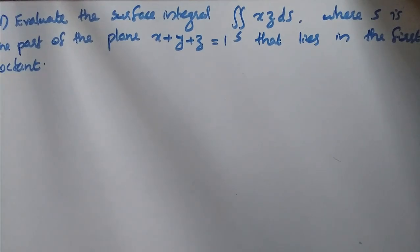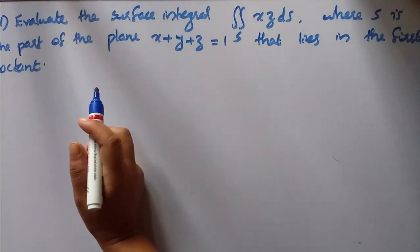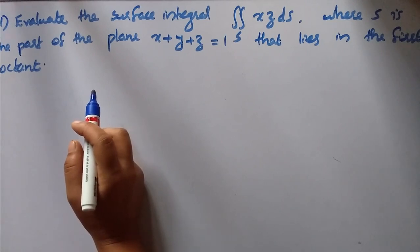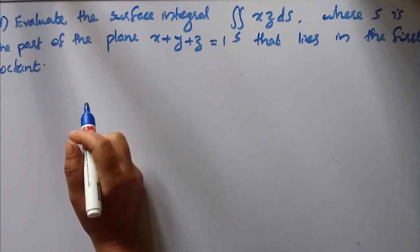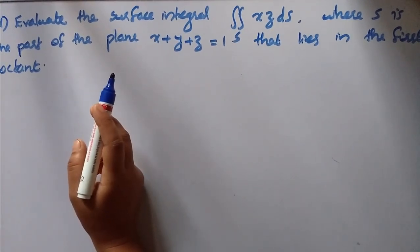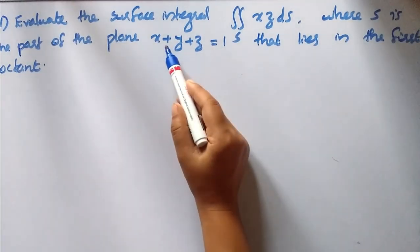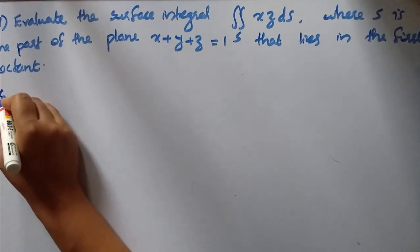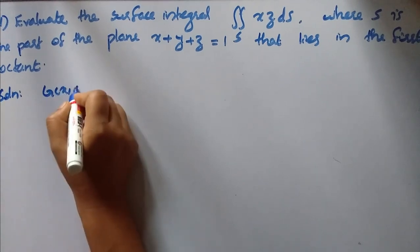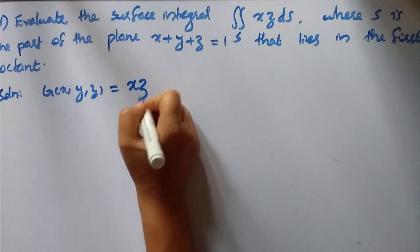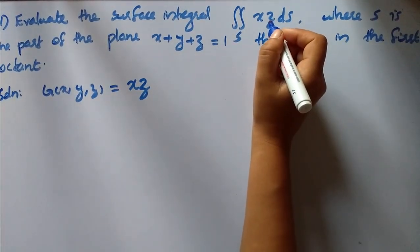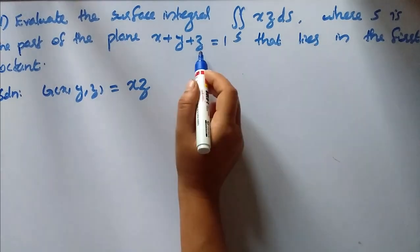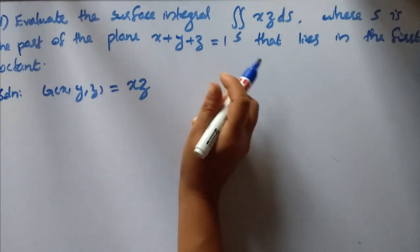The surface integral formula requires us to integrate g of x, y, z equal to x·z over the surface, which is the part of the plane x plus y plus z equal to 1 that lies in the first octant. We identify the x-axis, y-axis, and z-axis and set up the integral accordingly.